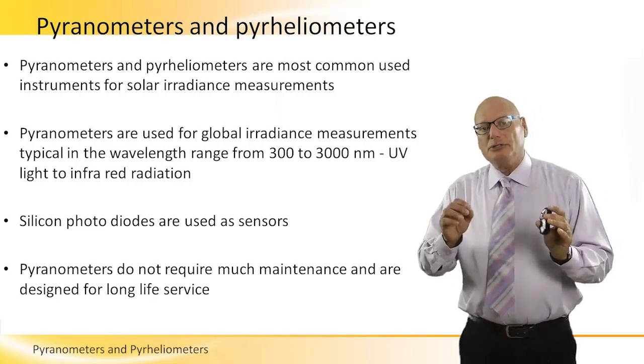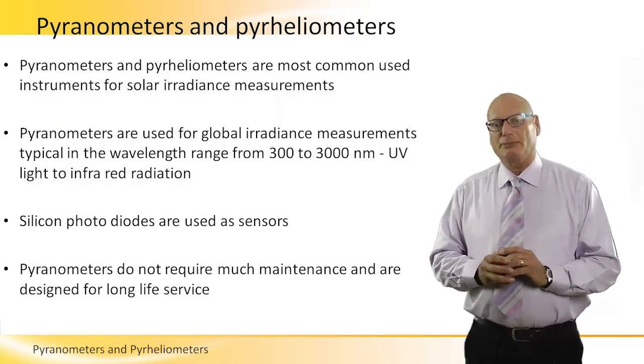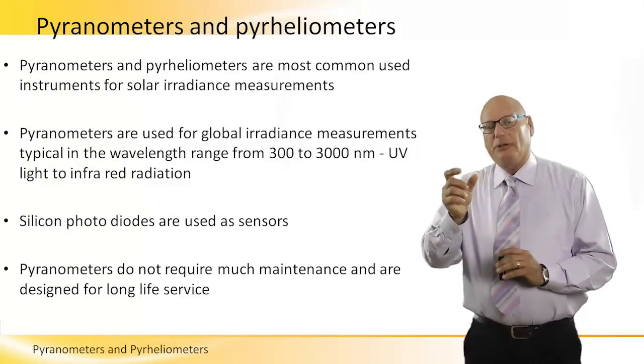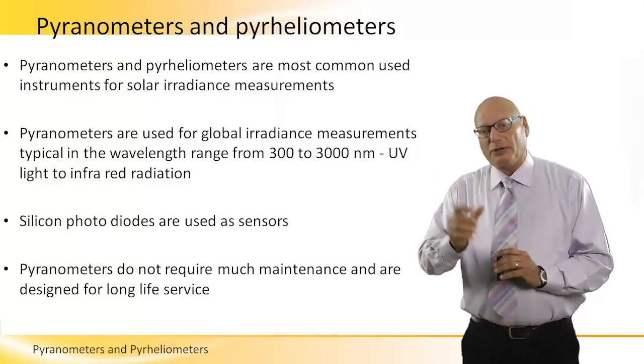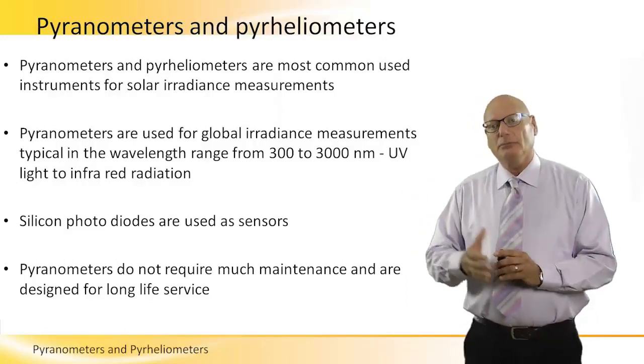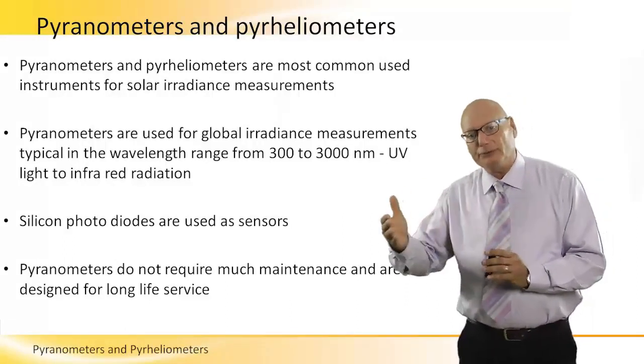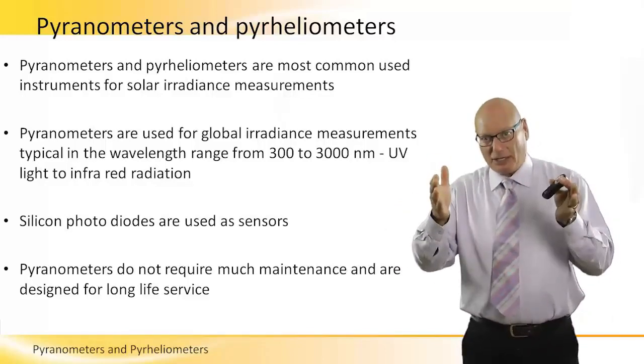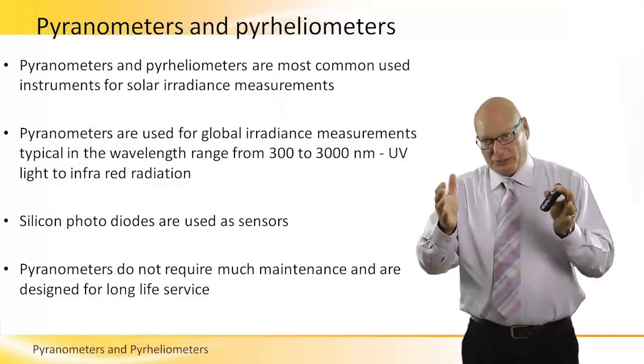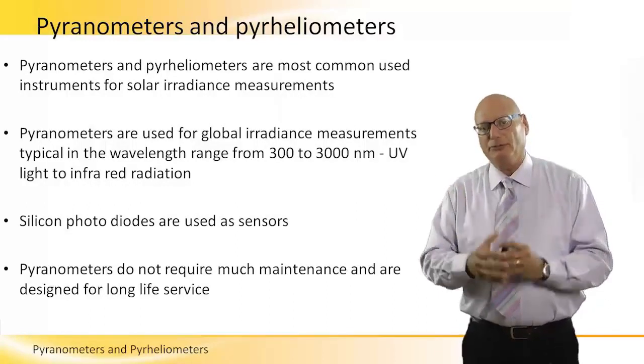The most commonly used instrument for solar irradiance measurements. The wavelength of the pyranometer is between 300 to 3000 nanometers, basically from UV light to infrared radiation, which is the bandwidth that is effective and relevant to the PV industry.